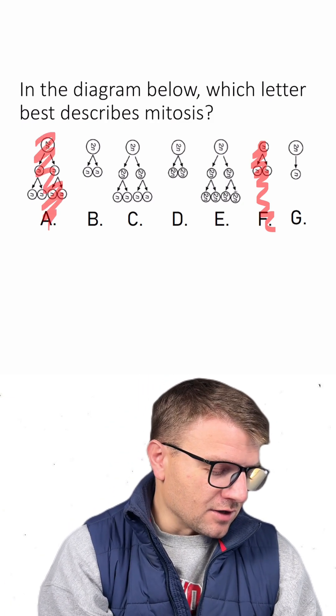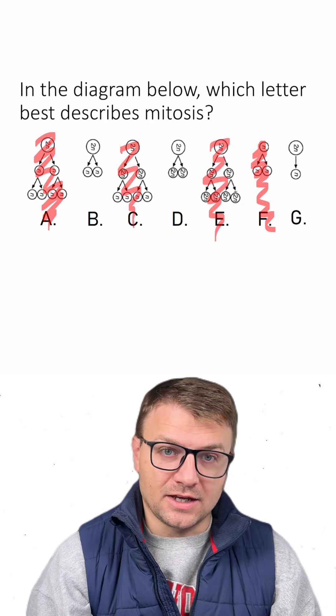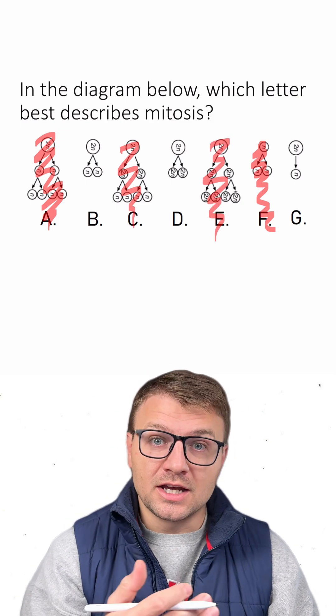So A is not the answer, C is not the answer, and E is not the answer since there are two rounds of division in those diagrams.